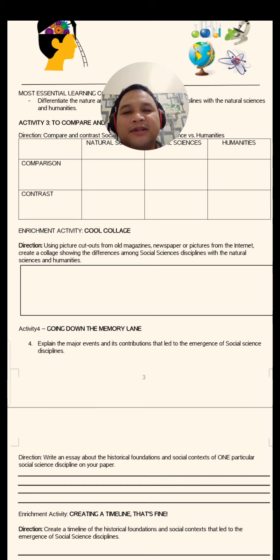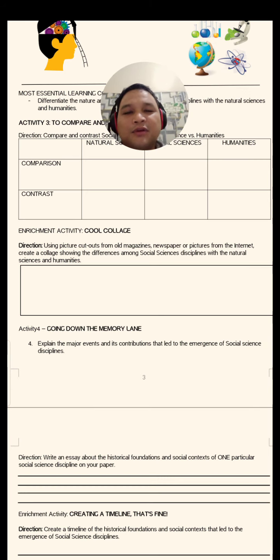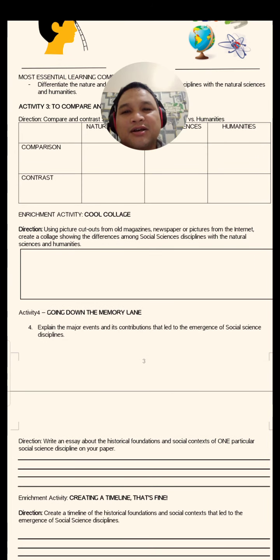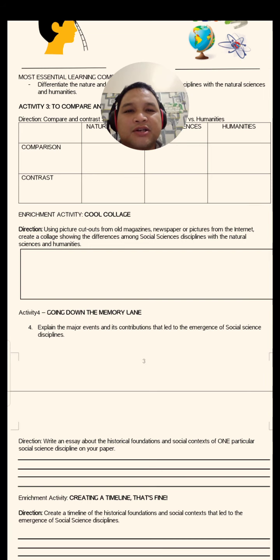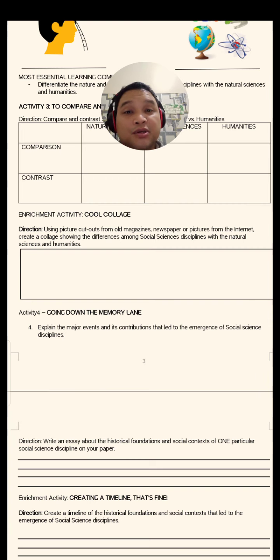For your enrichment activity, we're going to call this 'Cool Collage.' Using picture cutouts from old magazines, newspapers, or pictures from the internet, create a collage showing the differences among social sciences, disciplines with the natural sciences, and humanities.